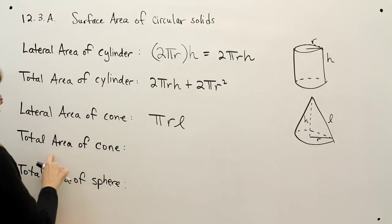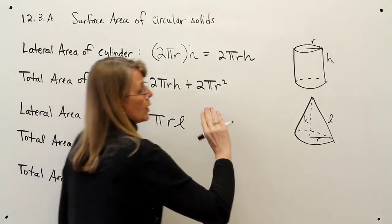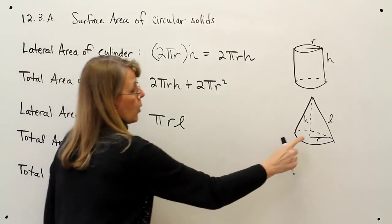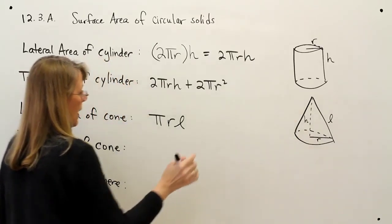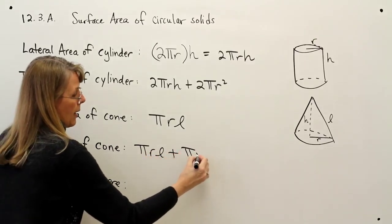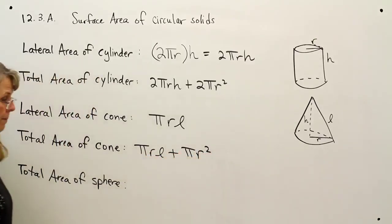You can see it labeled there. The total area of the cone would include that lateral area and the bottom. Notice a cone only has one bottom—we have no top on the cone. So it would be πrl plus πr² for the bottom.